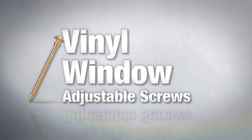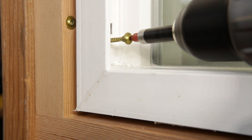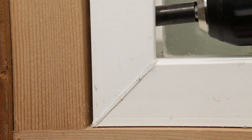The GRK vinyl window screw eliminates shims when installing vinyl windows. The vinyl window screw is engineered for ease of use, performance you can rely on, and quality you can expect.